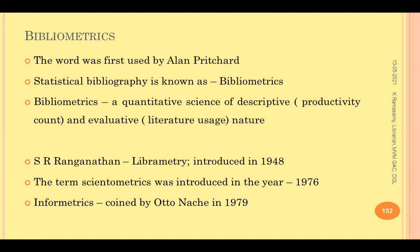The word bibliometrics was first used by Arlen Pritchard. Once long back, it was called statistical bibliography; now it is called bibliometrics. Dr. S.R. Ranganathan, in 1948, in a conference, introduced the term librometry, where he talked about the use of mathematical and statistical tools in library science. The term bibliometrics means a quantitative science of descriptive and evaluative nature. We are bothered about two different things: descriptive nature and evaluative nature.